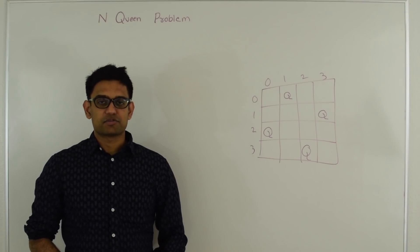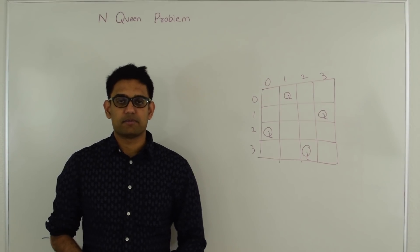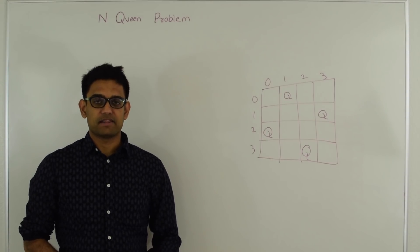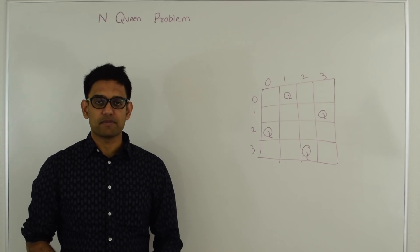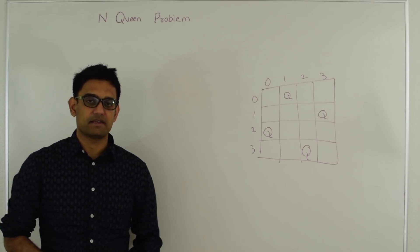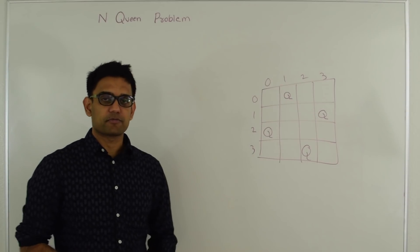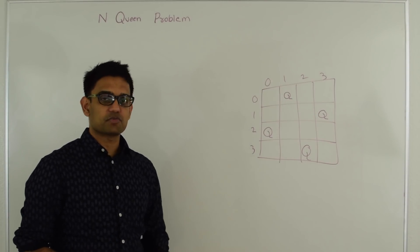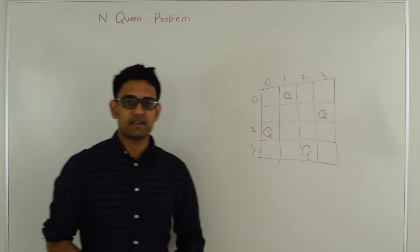Hello friends, my name is Tushar and today I'm going to talk about the N-Queen problem. You're given an N x N board and there are N queens. You have to find any placement of these queens on the board so that they do not attack each other. For example, on a 4x4 board, this is one arrangement such that the queens are not attacking each other.